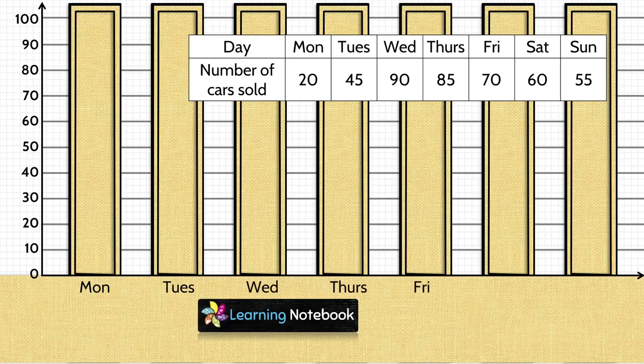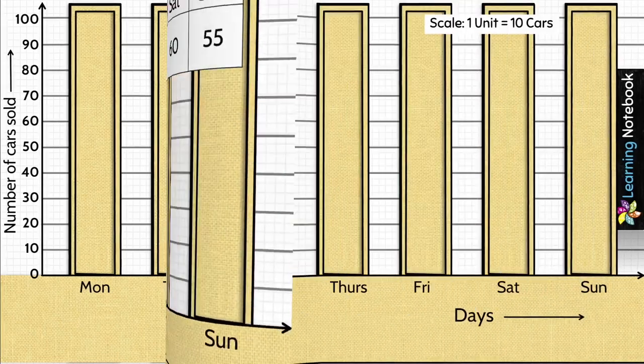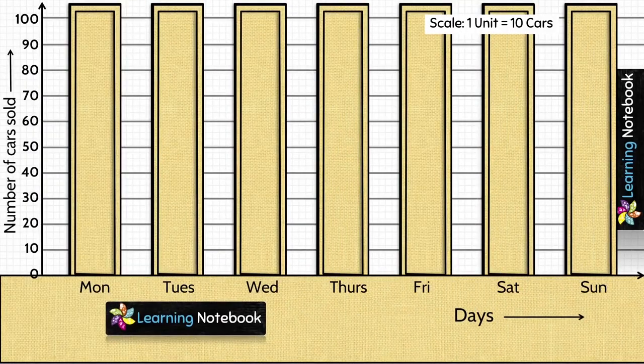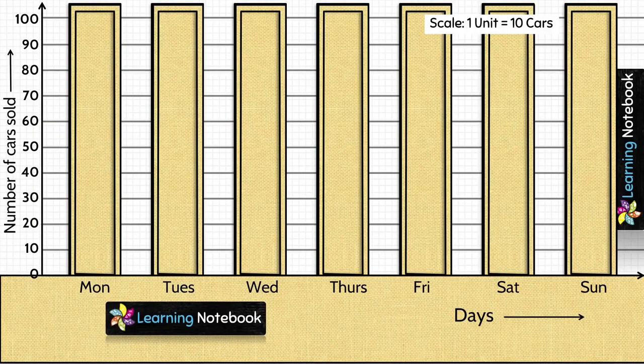That is Monday, Tuesday, Wednesday and so on till Sunday. After this, we are going to label the y-axis as number of cars sold and x-axis as days. Now students, let's plot the bar graph.